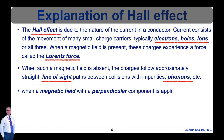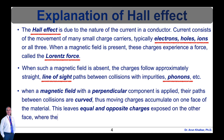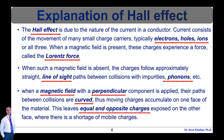When a magnetic field with a perpendicular component is applied, the paths of charge carriers between collisions are curved. Thus, moving charges accumulate on one face of the material, leaving equal and opposite charges exposed on the other face where there is a shortage of mobile charges. The result is an asymmetric distribution of charge density across the whole element, arising from a force perpendicular both to the line-of-sight path and to the applied magnetic field. The separation of charge establishes an electric field that opposes further charge migration, so a steady electric potential is established for as long as charge is flowing.